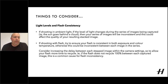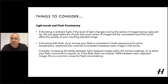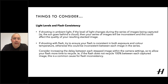There are some things to consider when doing focus bracketing. If shooting in ambient light, the level of light changes during a series of images being captured — for example, if you're shooting outside, the sun can go behind a cloud and change your exposure, making your series of images inconsistent. Due to focus bracketing requiring a series of images that will be composited together, your shoot consistency needs to be as consistent as possible. Also, if shooting with flash, try to ensure your flash is consistent in both exposure and colour temperature. If the flash power isn't consistent between each shot, you're going to get some inconsistent exposures which could then cause complications for the stacking process.